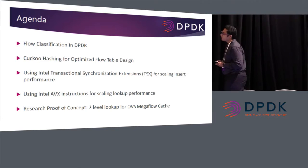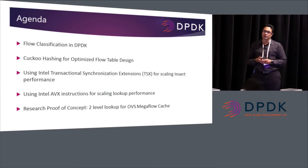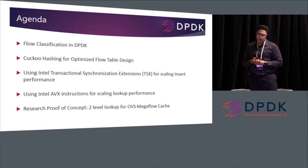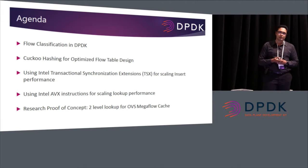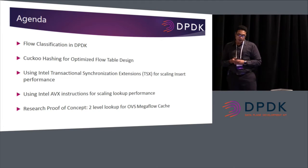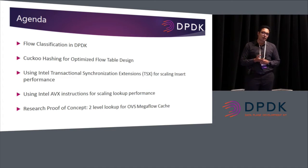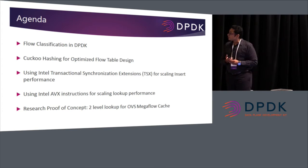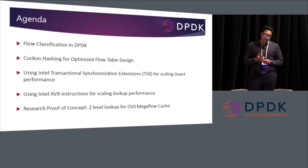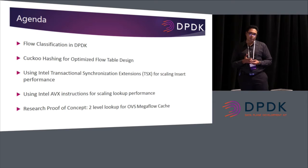The outline of my talk: I will start with flow classification in general in DPDK. Then we'll summarize a hashing algorithm that we already pushed in version 2.1, which is cuckoo hashing, and how this optimizes the flow table design. Then we'll introduce our optimizations, which includes two optimizations. One of them is using TSX, the transactional synchronization extensions for Intel, and how this helps in scaling the search rate for the flow table. Towards the end, I will talk about AVX, the advanced vector instructions, and how we're using that to improve the lookup performance.